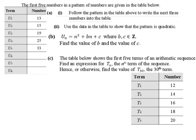Part C. The table below shows the first five terms of an arithmetic sequence. Find an expression for tₙ, the nth term of the sequence. Hence or otherwise, find the value of t₃₀, the 30th term. Term 1 is 12, Term 2 is 14, Term 3 is 16, Term 4 is 18, and Term 5 is 20.